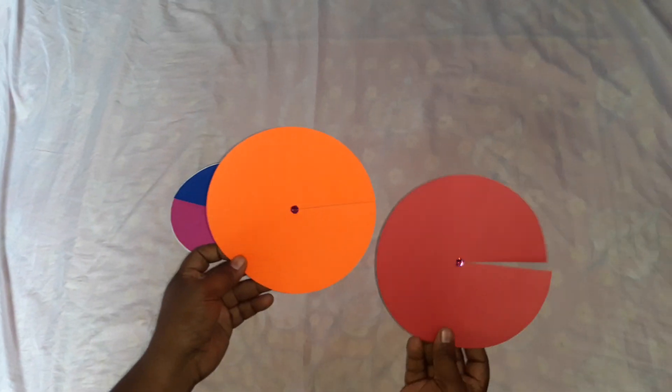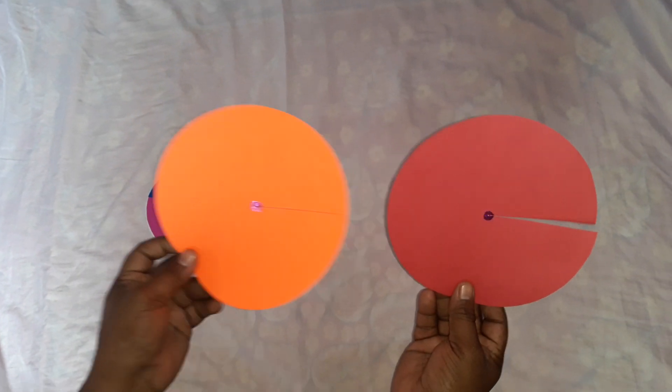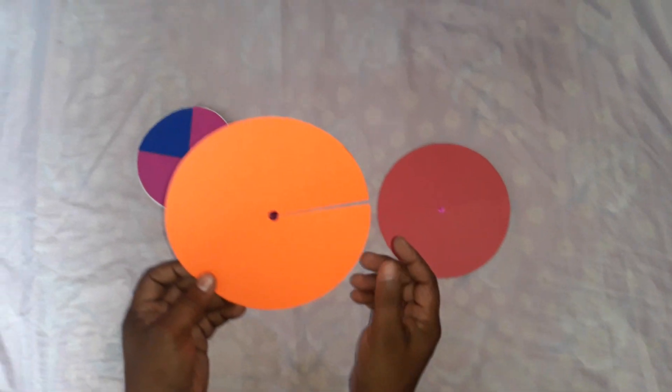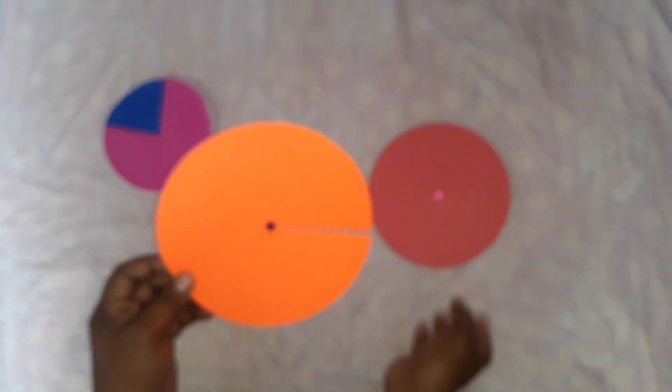Friends, today I want to explain a very simple TLM to explain the properties of circles and some type of angles.